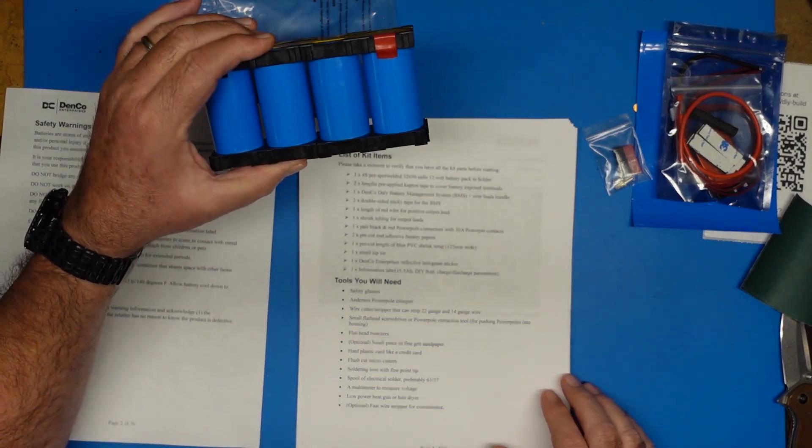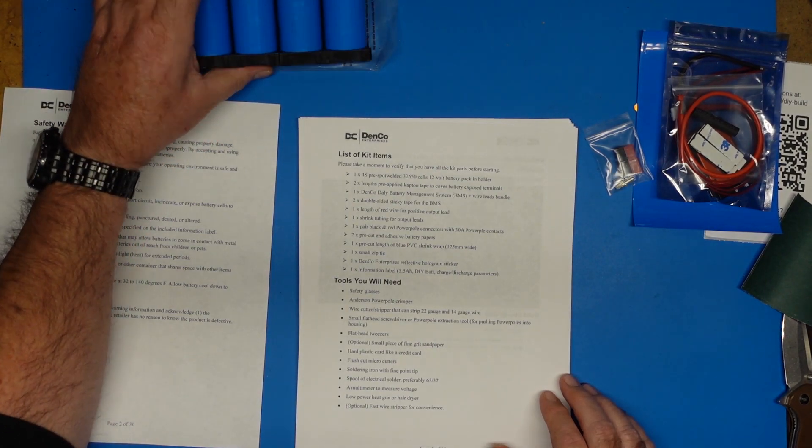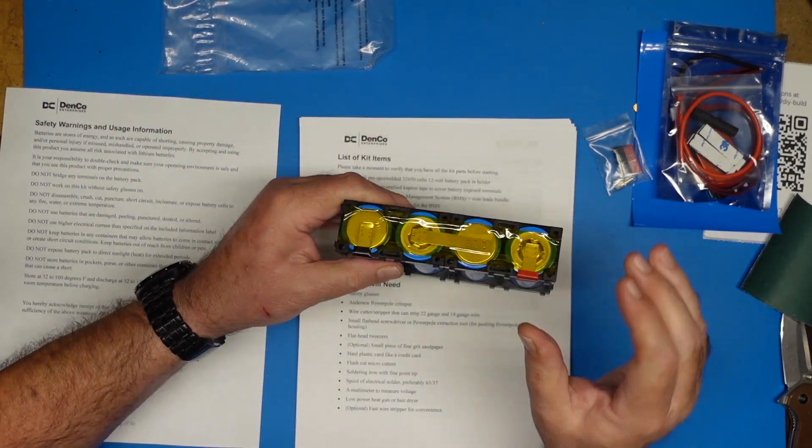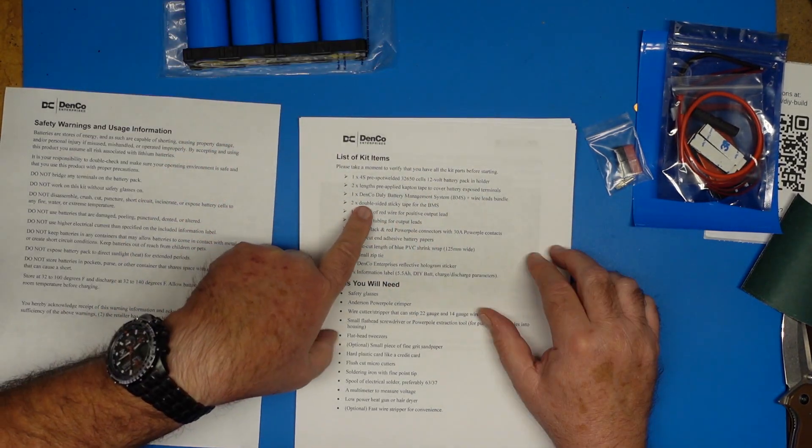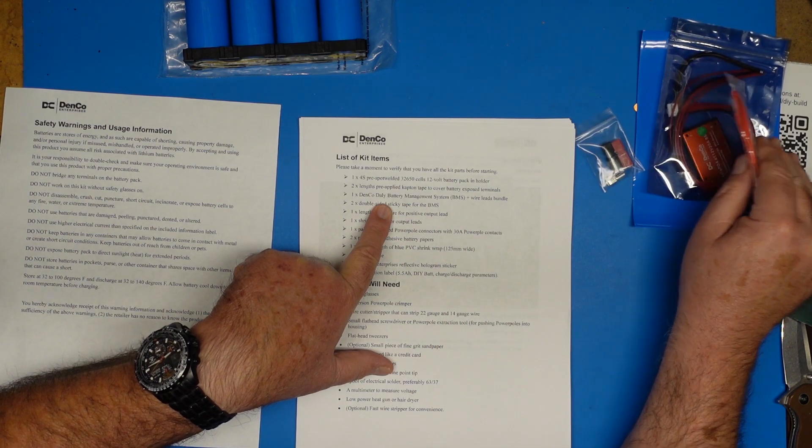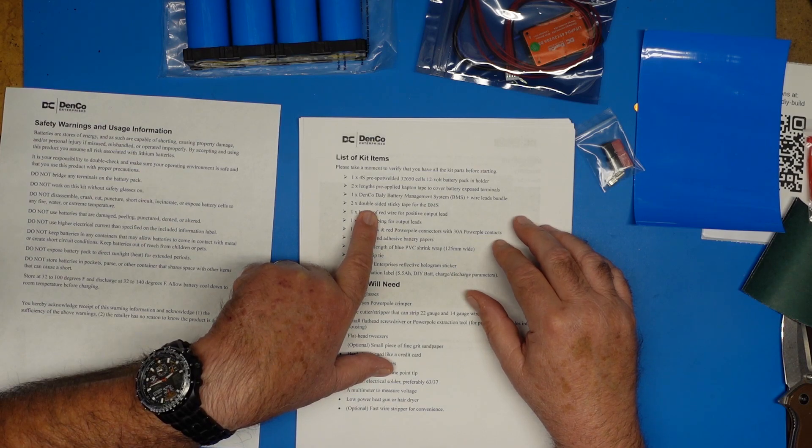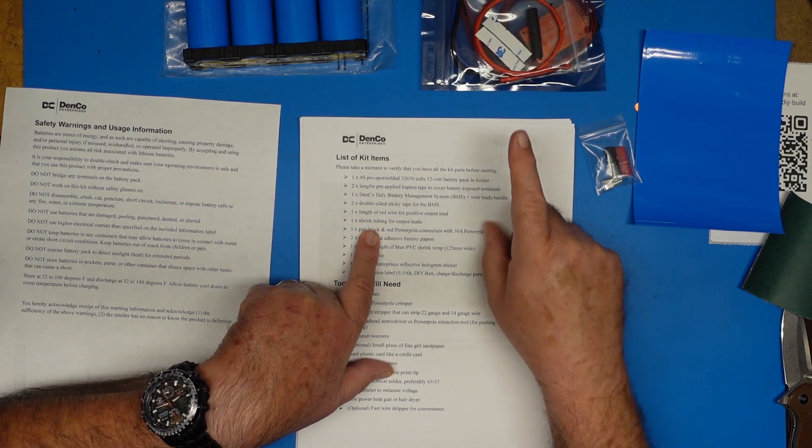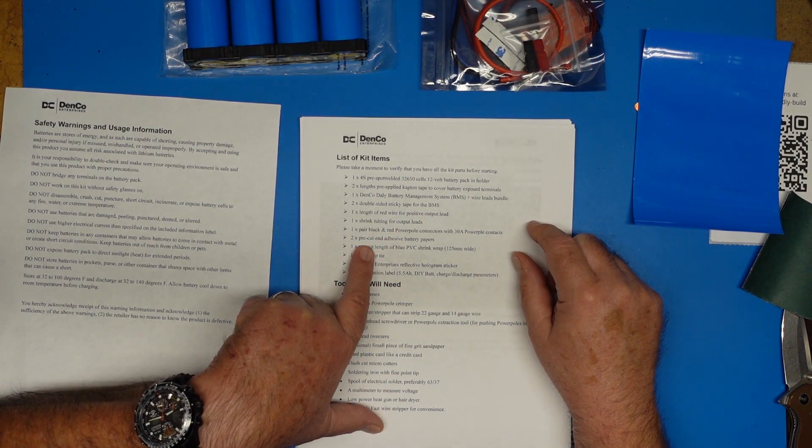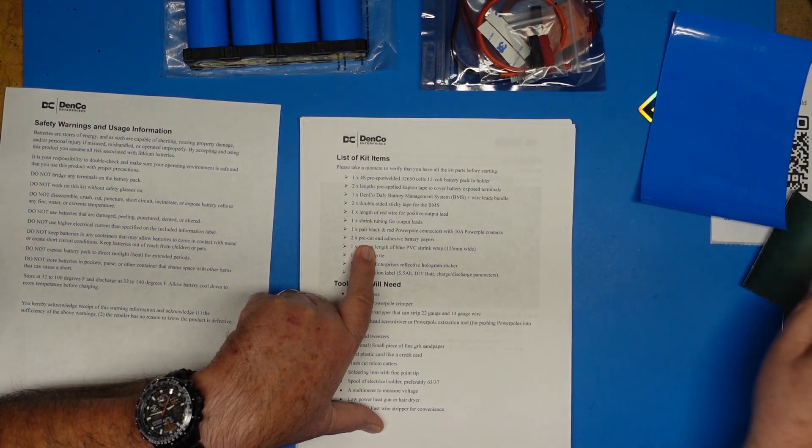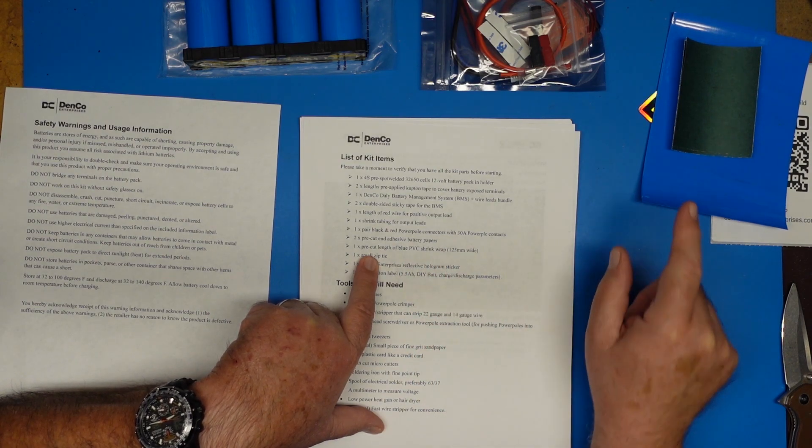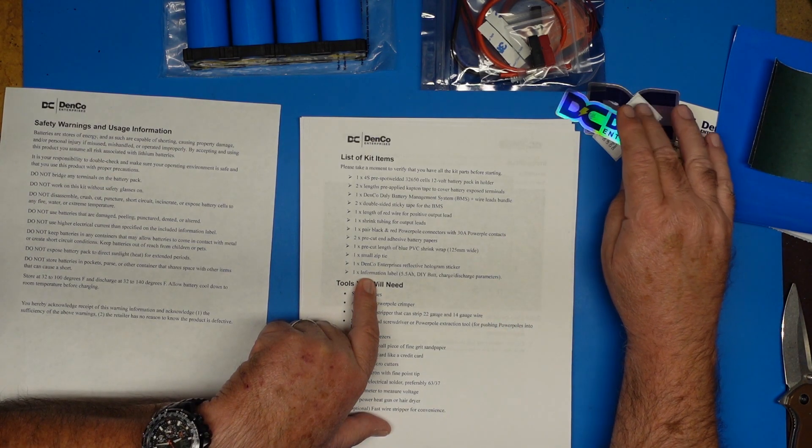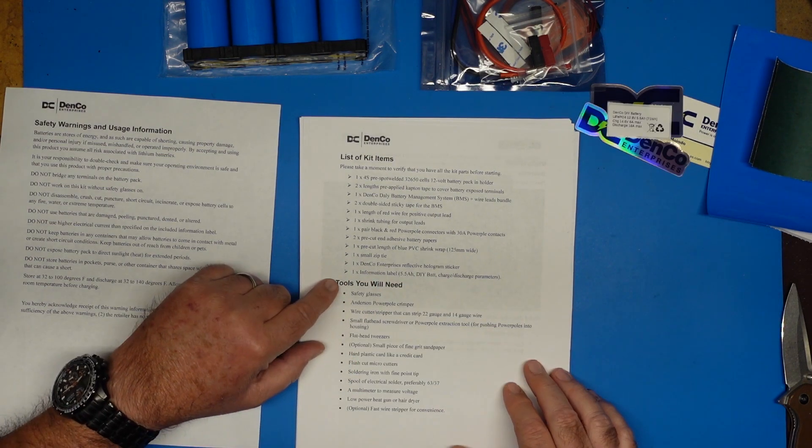We have a list of kit items here that everything we need, as well as a list of tools that we're going to need for this. A few optional things in the tool list. We have one 4S pre-spot welded 32650, I think I said 760, 32650 cells. Two lengths of pre-applied captain tape, one on top and one on bottom. We'll have to remove these and save them to put back on later, because we're going to have to do a little bit of soldering on that. One Denco daily battery management system plus wire lead bundle, which we have right here. Two double-sided sticky tape for the BMS, which we have right here. One length of red wire for positive output lead, also in the bag. Shrink tubing in that little bag. One pair of black and red power pole connectors. Check. Two pre-cut adhesive battery papers, which we have right here. One pre-cut piece of blue PVC shrink wrap, which we've already seen. A zip tie that's in that little bag. A Denco Enterprises reflective hologram sticker. We actually have two of those. Very fancy. And the information label.